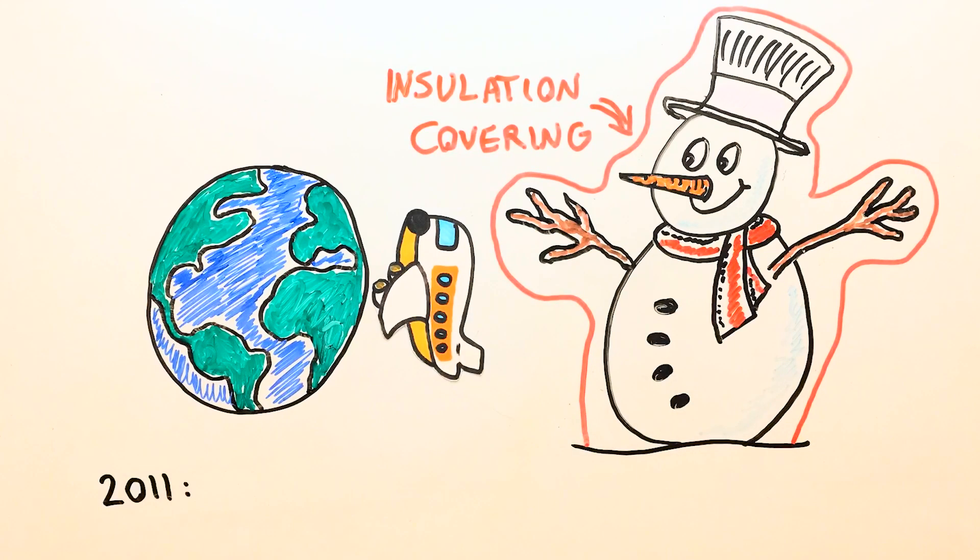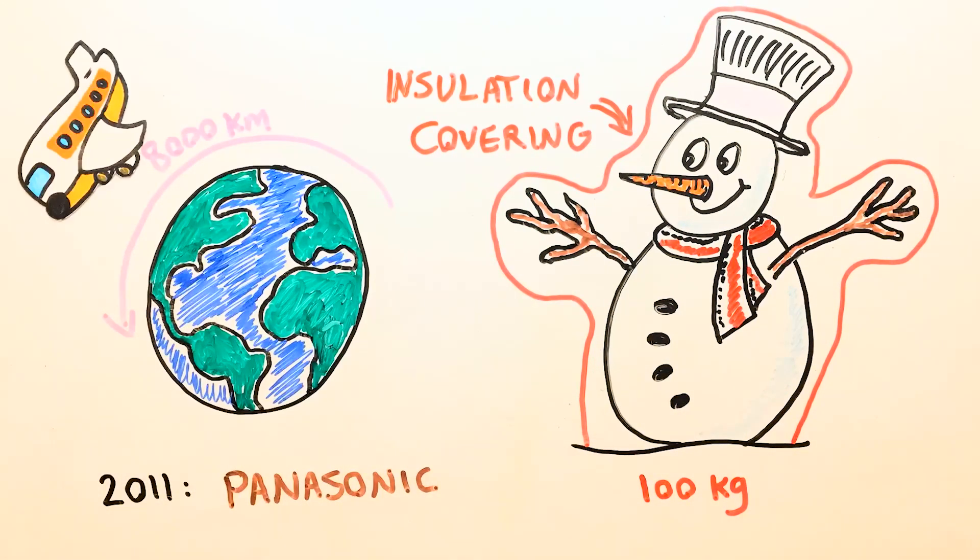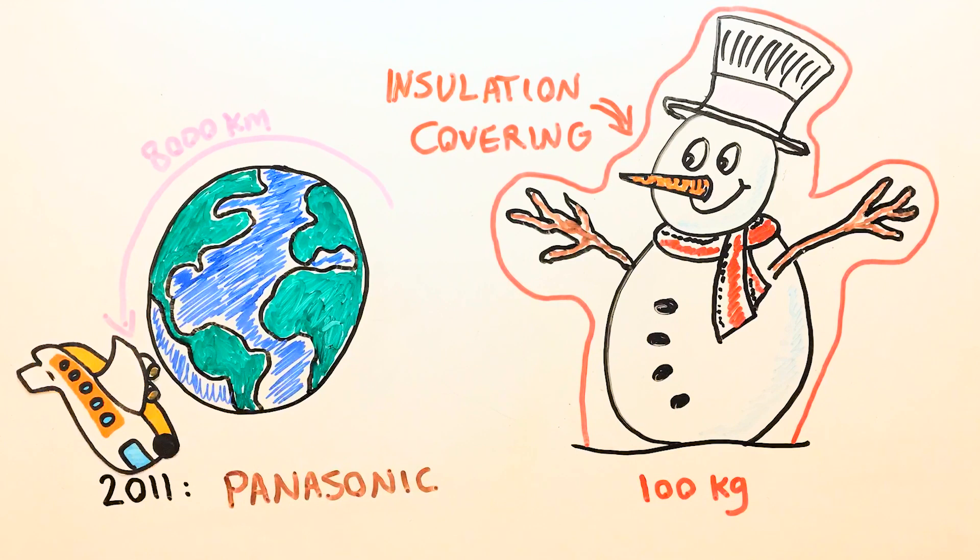In fact, back in 2011, a Japanese manufacturer of vacuum-insulated panels tested this idea. They successfully airshipped the snowman of around 100 kg to an airy destination about 8000 km away to complete a beautiful vision.